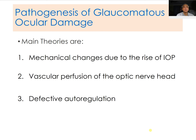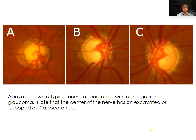The pathogenesis of glaucomatous ocular damage is the same for congenital and adult onset glaucoma: mechanical changes due to the rise of IOP cause the glaucoma, or there is compromised vascular perfusion of the optic disc head, or defective autoregulation of the blood supply of the optic nerve.